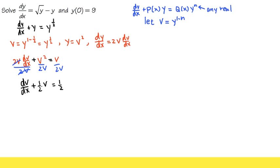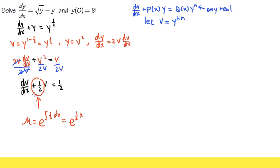We can go ahead and find our integrating factor. So mu equals e raised to the integral of 1/2 dx. The integral of 1/2 dx is just 1/2 x, so we have e to the 1/2 x. Be sure you don't put a plus c here, because this is just an integrating factor — we only put a plus c when we're solving a differential equation. So let's multiply everything by e to the 1/2 x.